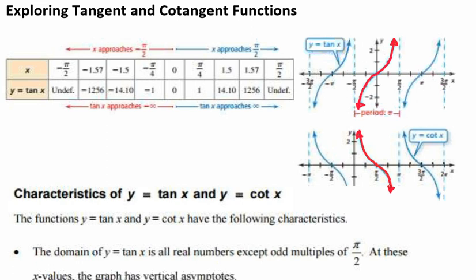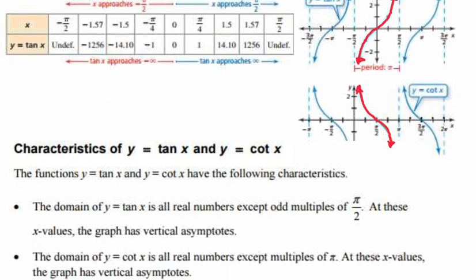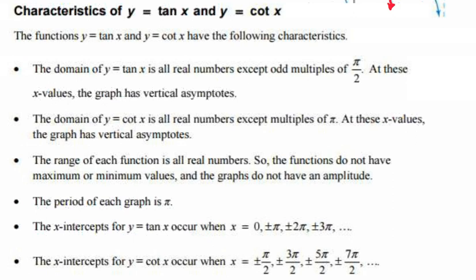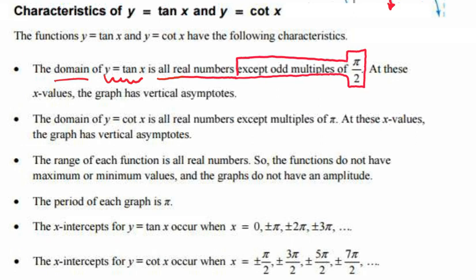Some characteristics of y equals the tangent of x and y equals the cotangent of x are as follows. The domain of y equals the tangent of x is all real numbers except odd multiples of pi over 2. At these x values, the graph has a vertical asymptote.